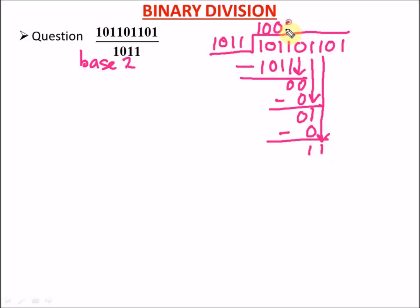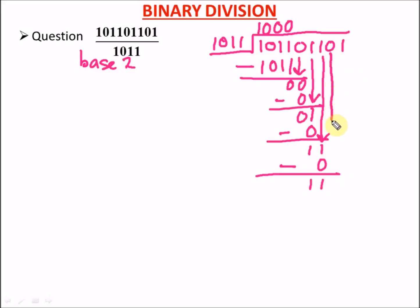We drop down the next 1, giving us 11. Can 1011 go into 11? No, so we write zero. Zero times 1011 is zero; 1 minus 0 is 1. We drop down the next digit, 1, and then the following digit, which is 0. Can 1011 go into 110? No, so we write another zero. Zero times 1011 is zero.